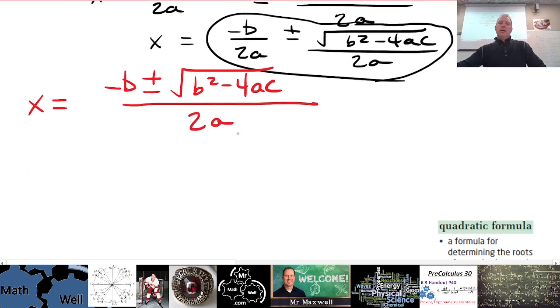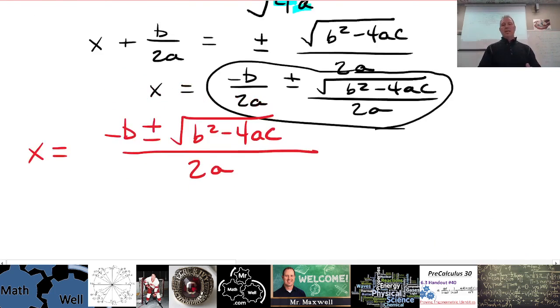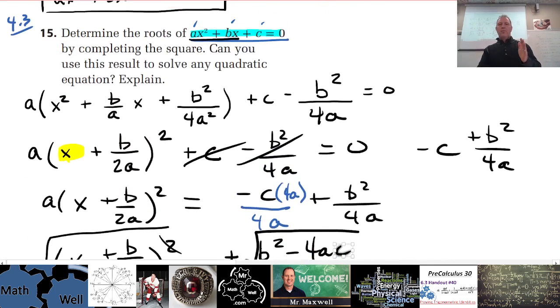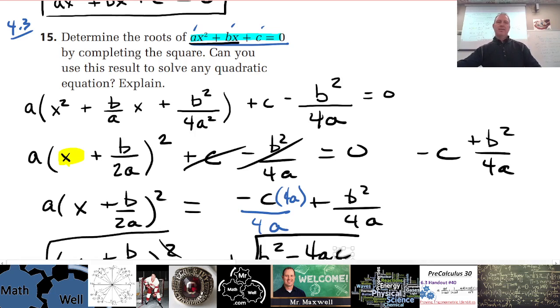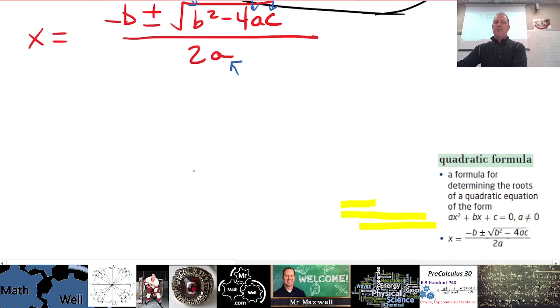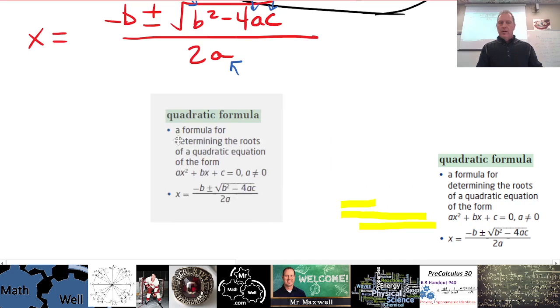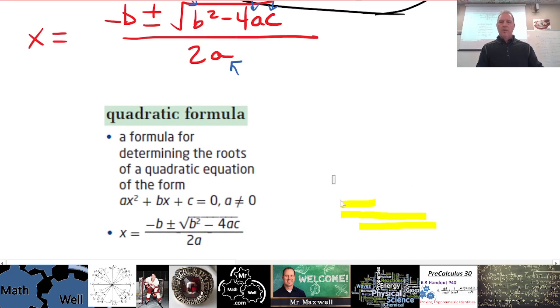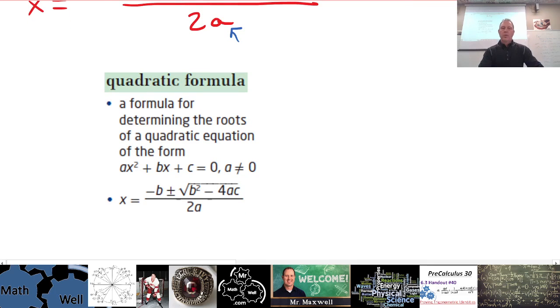Now that we have x all by itself and in terms of a, b, and c, so because we've done this process properly, we've completed the square, we've accounted for everything. Notice that I can use the a value, the b value, and the c value from my standard equation, and I can just plug those values in here, here, here, here, and here, and I will get the solution or the root for x. So this is what the quadratic formula is right here.